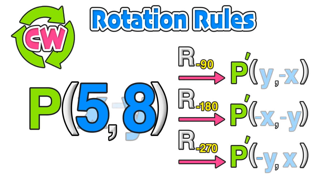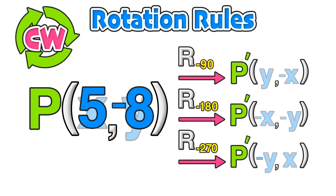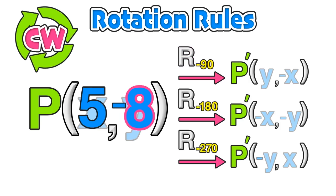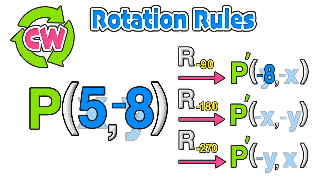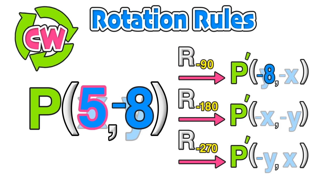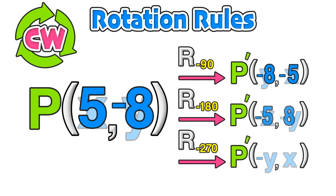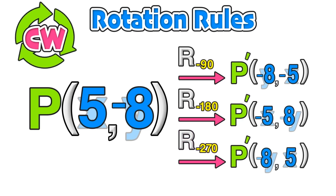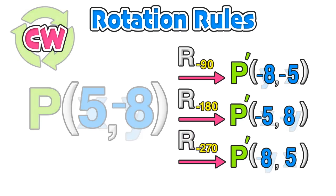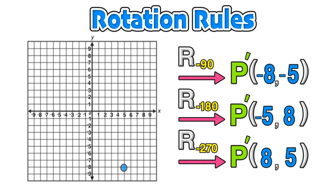Using the point from the last example, (5, −8): by applying the negative 90-degree rule, we start with the y-coordinate negative 8, and then the second value is the negated x-coordinate, so negative 5. You can apply these rules for negative 180 as well as negative 270 to get the coordinates of those images. Again, these points correspond with the points found using the visual method.